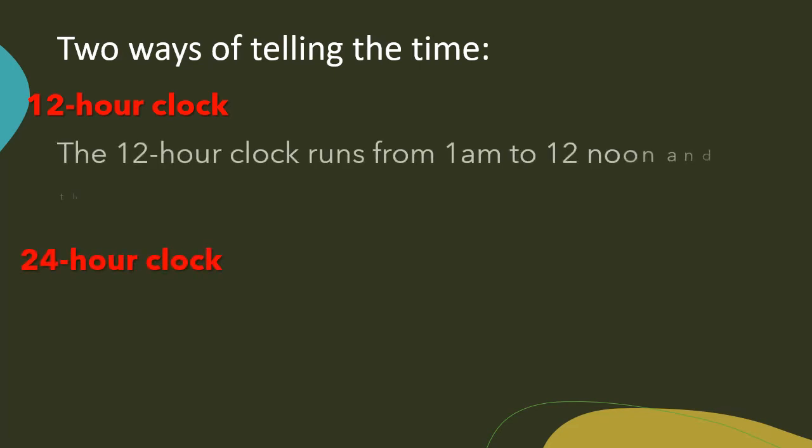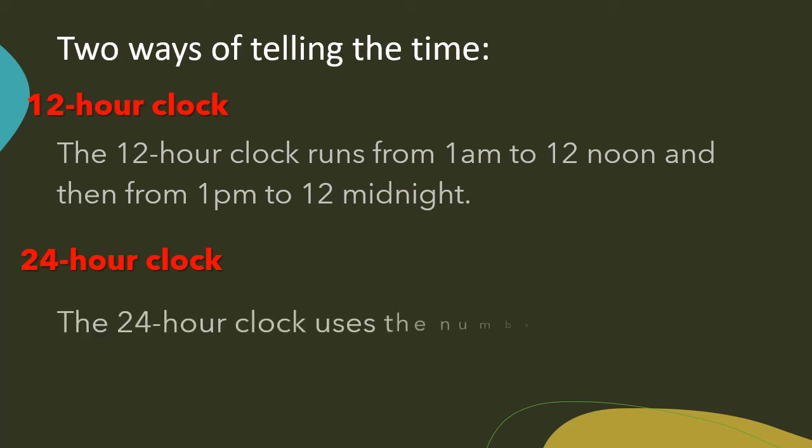The 12 hour clock runs from 1 a.m. to 12 noon and then from 1 p.m. to 12 midnight. While the 24 hour clock uses the numbers 0000 to 2359, or midnight is 0000.